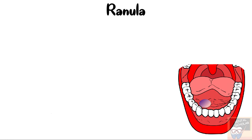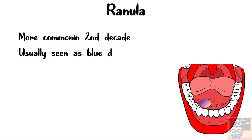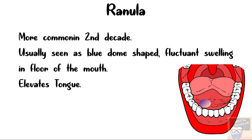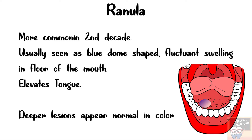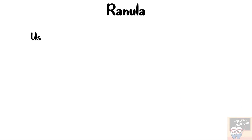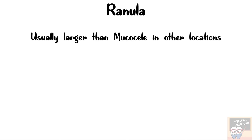Ranulas are more common in the second decade and they are usually seen as blue dome-shaped fluctuant swellings in the floor of the mouth. They may also elevate the tongue when they are sufficiently large in size, and the deeper lesions may appear normal in color. A ranula is usually larger than mucoceles which may be seen in other locations.